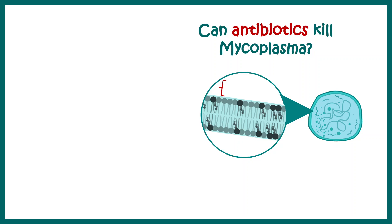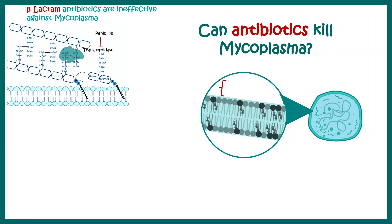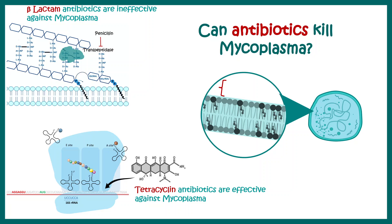The question is whether mycoplasma can be killed by antibiotics. It turns out beta-lactam antibiotics such as penicillin cannot harm these bacteria, because they don't have a cell wall and beta-lactam antibiotics work on the cell wall. Other antibiotics like tetracycline, which works by preventing translation or new protein synthesis, can be effective against mycoplasma.